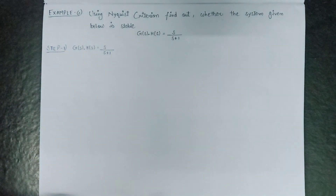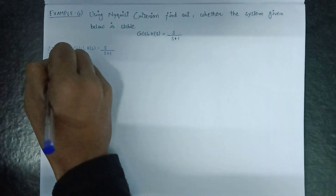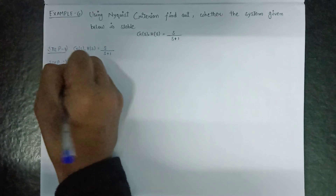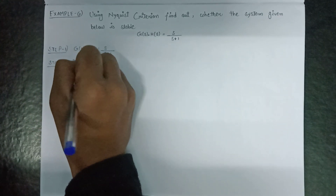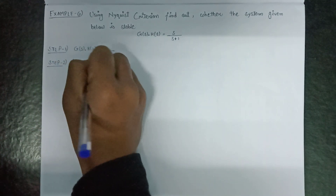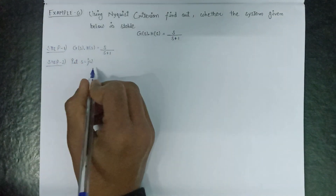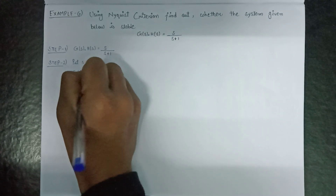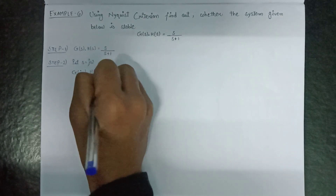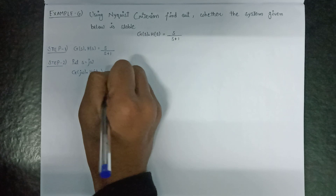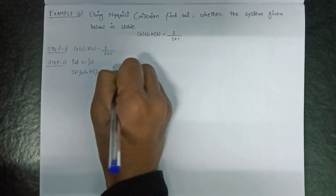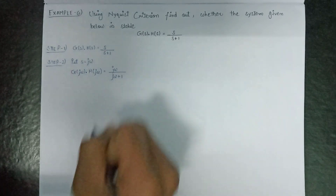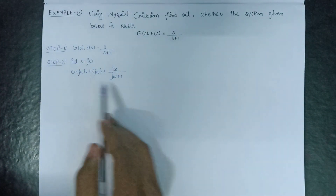Moving on to the next step, that is putting s equals to jω. On putting s equals to jω we get G(jω)·H(jω) equals jω divided by jω plus one. So this is step 2.